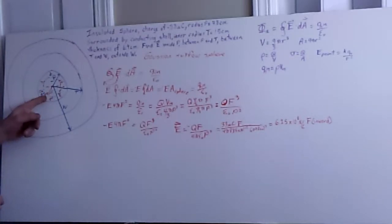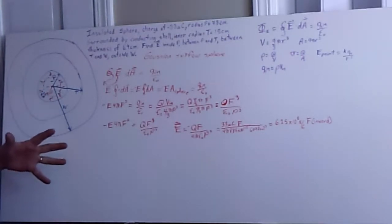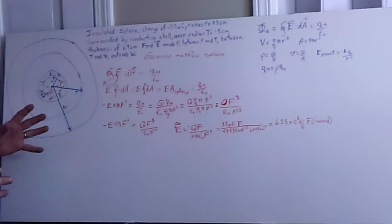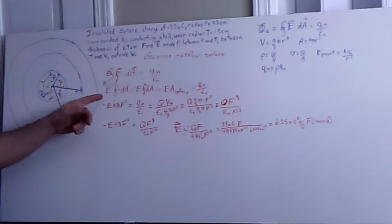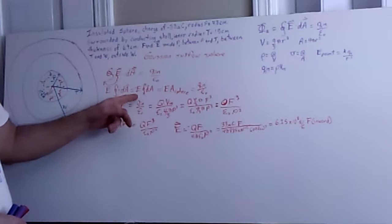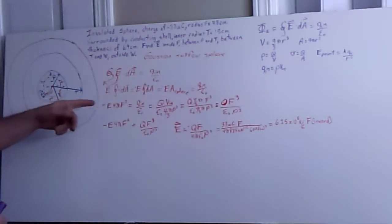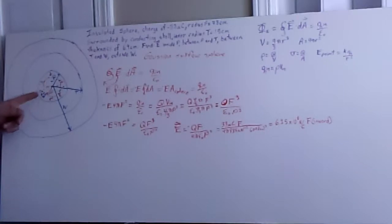And then we also note that the area vector, which always points outside or towards the exterior of any Gaussian surface, in this case points radially away. So that lets us bring the electric field to the outside, and that leaves us with negative E dot, E integral of dA because our dot product is taken care of by the area vector pointing out, the E field pointing in, cosine of 180 is negative 1.